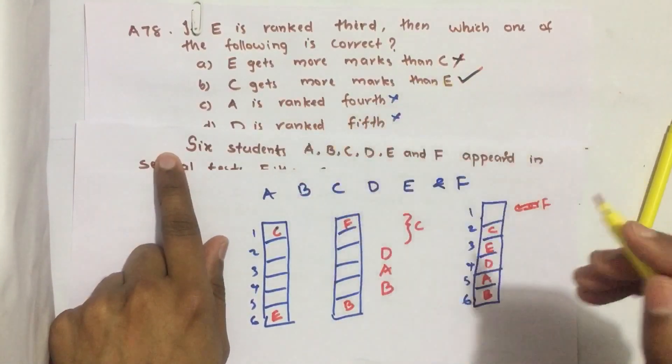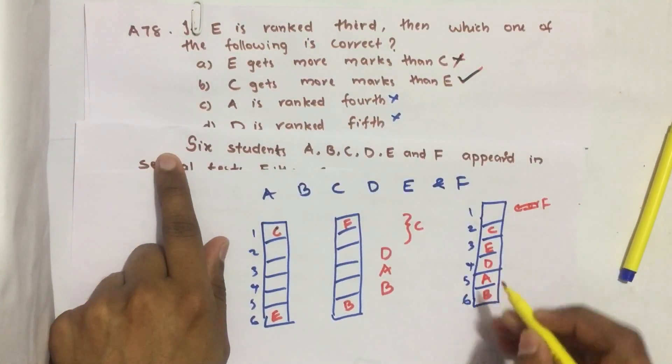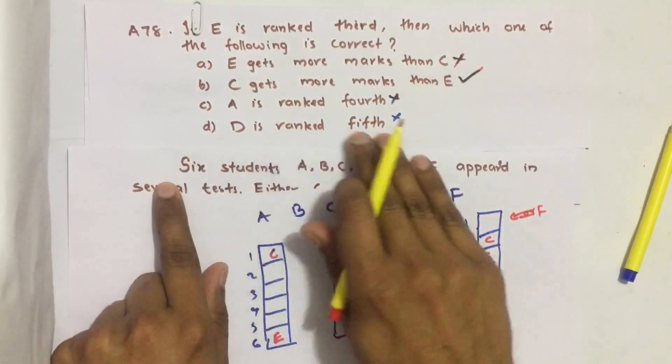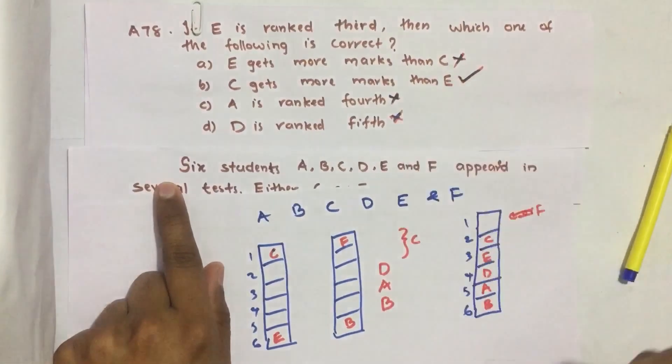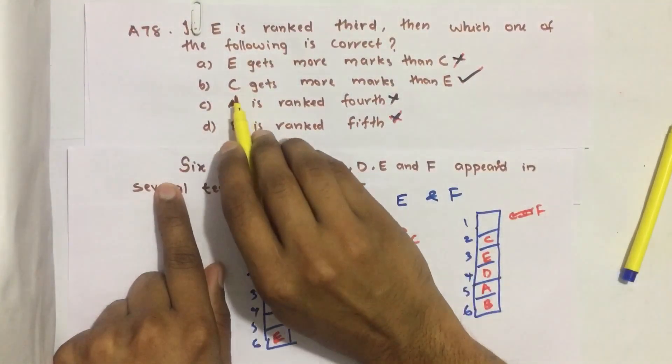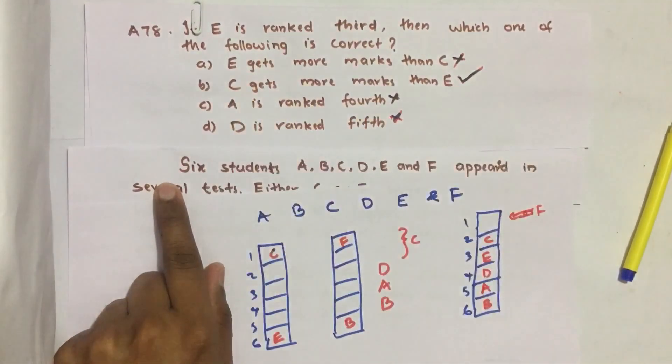A is ranked fourth - but A is ranked fifth, so this is also wrong. D is ranked fifth - but here D is ranked fourth. This statement is also wrong. So our answer should be: C gets more marks than E.